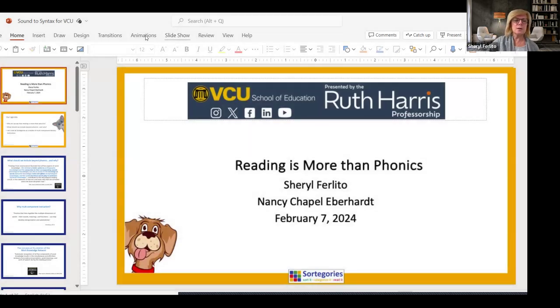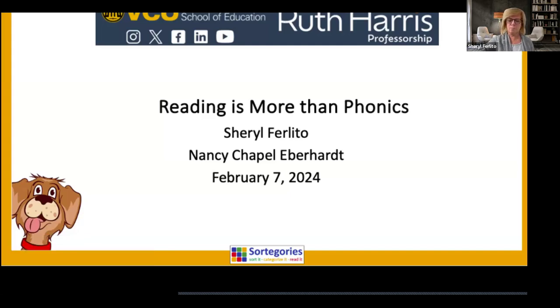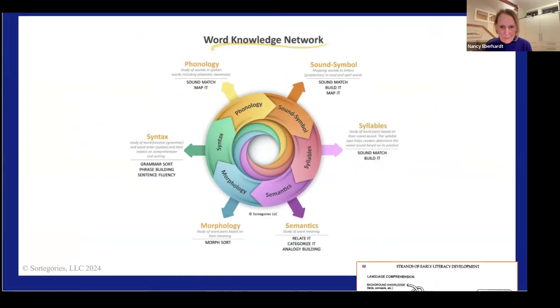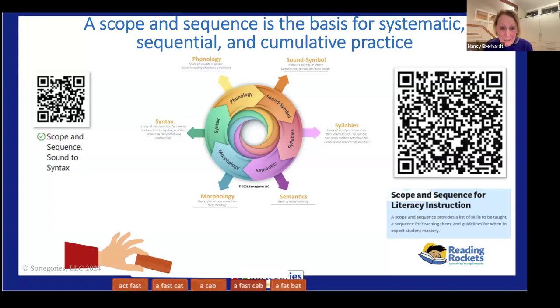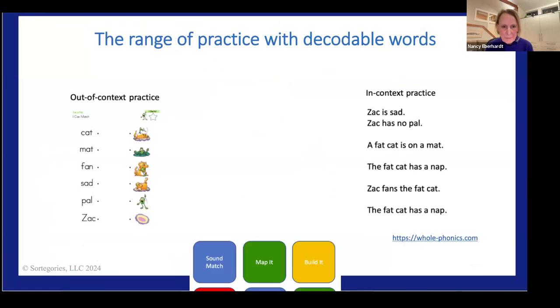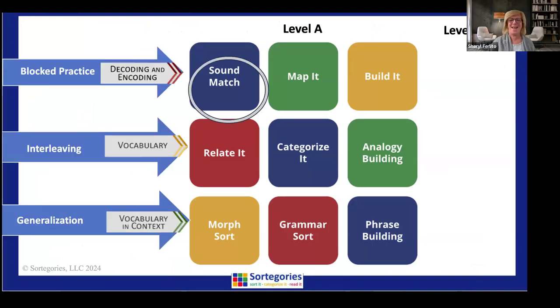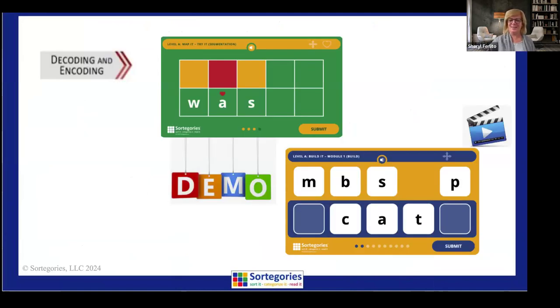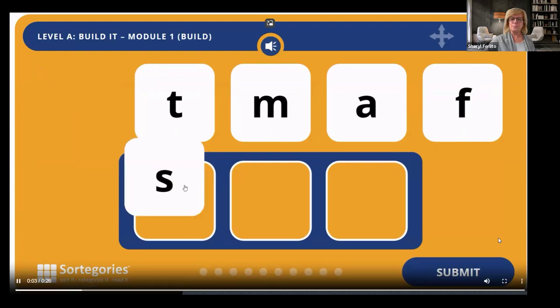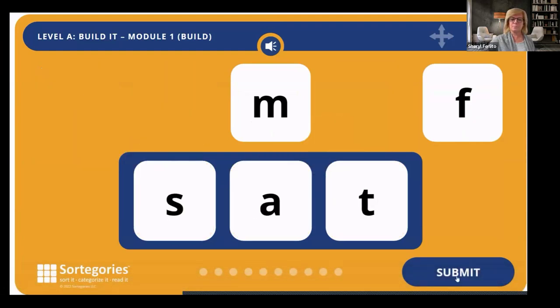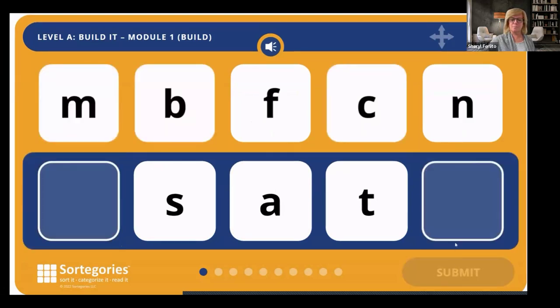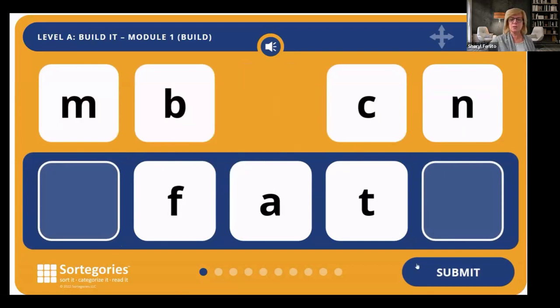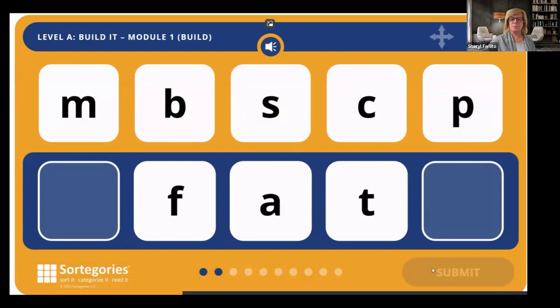And this is Build It. This is going to show a quick little video. Build 'sat.' Change 'sat' to 'fat.' So interleaving phonemic awareness and going into phonics. Change 'fat' to 'cat.'